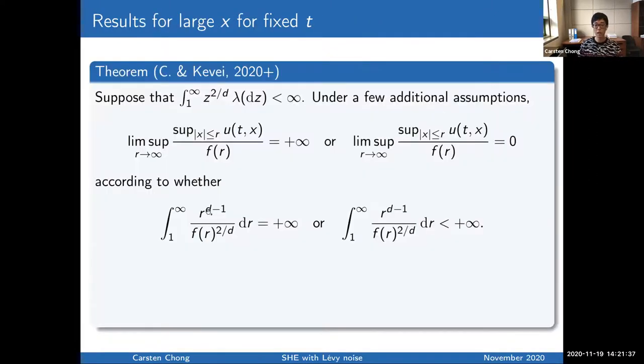So instead, let me mention another result in the other direction. What we have seen so far is the behavior for fixed space in time. Now we want to fix time and vary x. And actually, you see very similar results. Assuming that your noise has a finite 2 over d moment, you get again an integral test with a slightly different formula here. So again, the tallest peaks of the solution in space will not allow for a proper normalization.